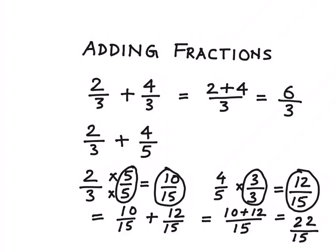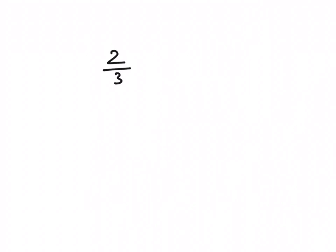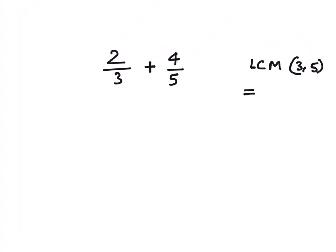So let's take this example again. We have 2 by 3 and 4 by 5. In case of unlike fractions, what we do is take the LCM of the denominators — so LCM of 3 and 5. We'll use the ladder method to find the LCM of 3 and 5.